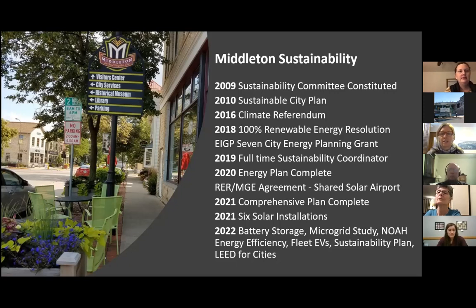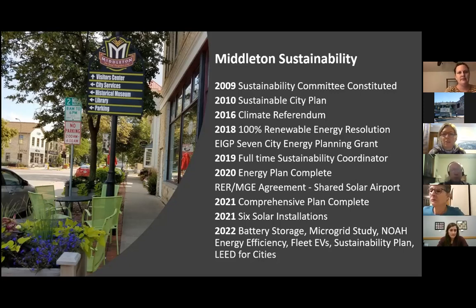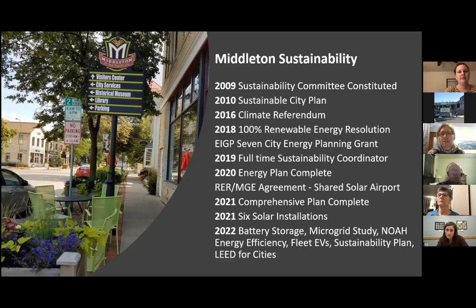With the sustainable city plan approved in 2010, combined with the initial work they did on that plan and the years following, and then the 2016 climate referendum — which was spearheaded by citizen members to put to a vote whether citizens would back climate change mitigation policy — that was put on the ballot in 2016 and passed with an 82% margin. Citizens really did want to work on climate change.